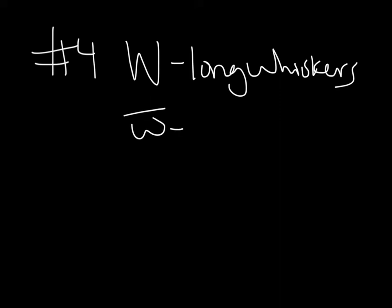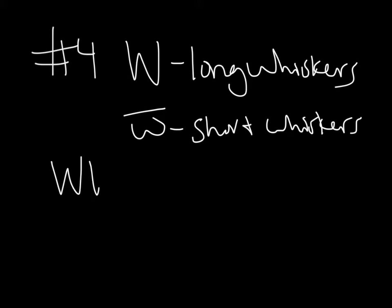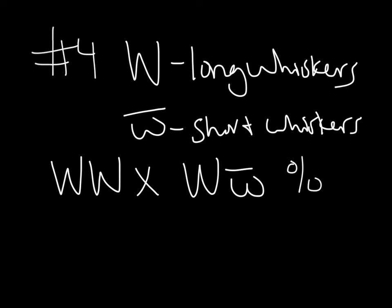Question number 4 discusses seals and whisker length. Big W is the dominant allele coding for long whiskers, and little w codes for short whiskers. Note that I'm putting a line over the little w so they're very distinguishable from each other. What percentage of offspring would be expected to have short whiskers from the cross of two long-whiskered seals — one homozygous dominant and one heterozygous? The question asks us what percent will have short whiskers.